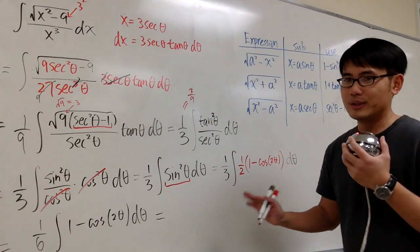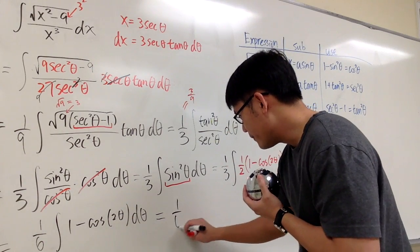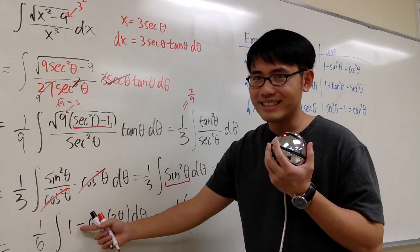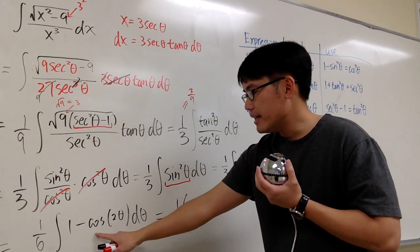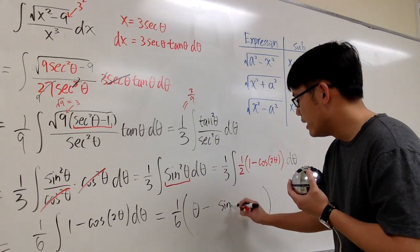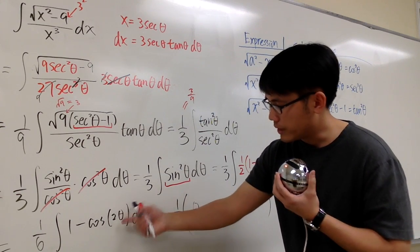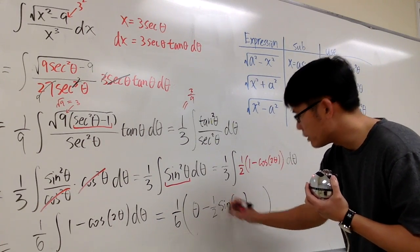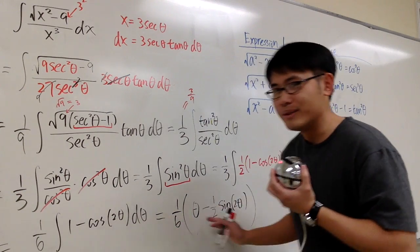Now we actually integrate. The result is one over six times: the integral of one gives theta, and the integral of negative cosine of two theta gives negative sine of two theta times one half, because the derivative of the inside is two. So we multiply by one half.